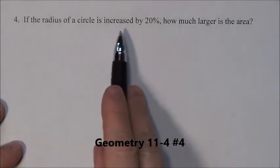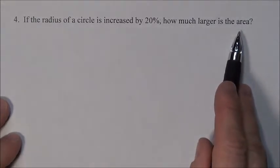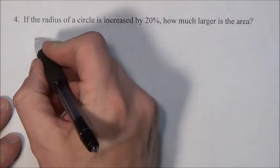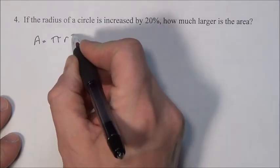Question 4. If the radius of a circle is increased by 20%, how much larger is the area? Well, your normal formula for area of a circle is π times your radius squared.